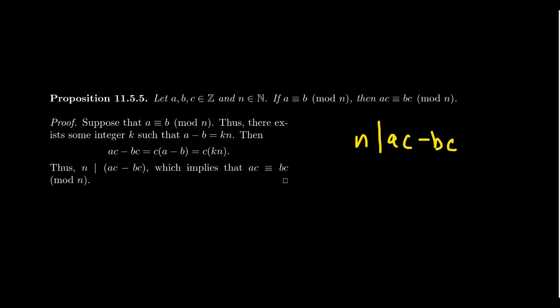So integer congruence is invariant under addition, subtraction, and multiplication. Division is more problematic, because dividing two integers doesn't necessarily yield an integer — for instance, one divided by two is not an integer. We'll consider division in our next video in the lecture series.